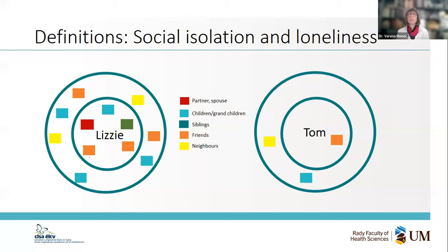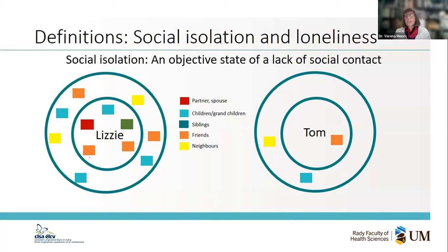The different colors reflect different types of people — for example, red is for a partner or spouse, and blue is for children and grandchildren. We carry these networks through life with us. When you look at the two networks, they're very different: Lizzie has a lot of people in her social network, Tom has very few. Social isolation is an objective state — a lack of social contact. It's something we can count: we can count the number of people in the network, ask about frequency of contact, and say that Lizzie is not socially isolated whereas Tom is.